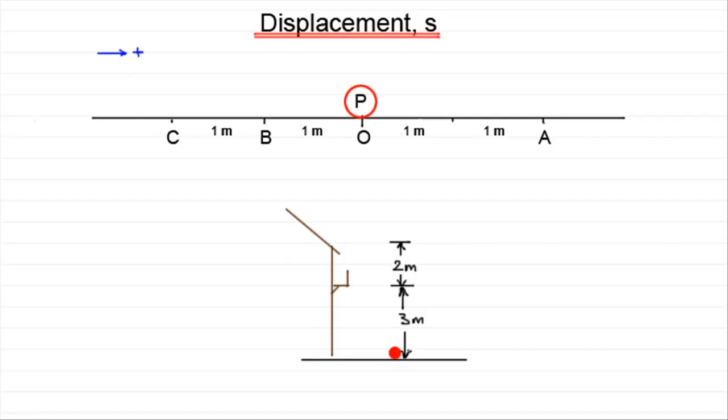Now what you don't want to do is confuse displacement with distance. Sometimes they'll be the same. Take for instance when our particle P moves to A. It's covered one, two meters. And its displacement is two meters. But if it returns back to O, it's travelled a distance of four meters, two meters out, two meters back. But its displacement is zero.